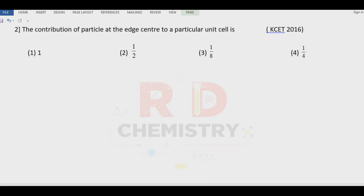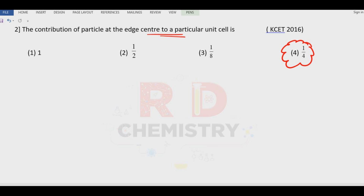Question number two: contribution of the particle at the edge center of a particular unit cell. One edge is shared by four unit cells; therefore the contribution of each edge particle is one-fourth. Fourth option is the answer.